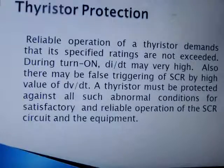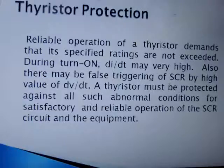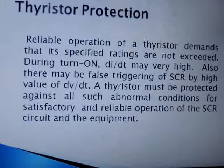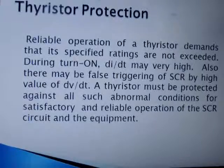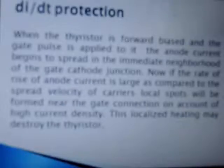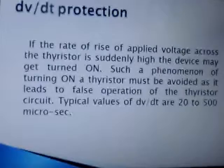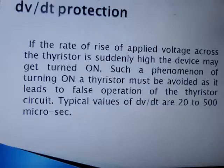Thyristor protection normally requires both di/dt and dv/dt protection. If the dv/dt of the supply is quite high, the thyristor will turn on without any gate pulse — this is called false triggering. To avoid this, dv/dt protection is provided. di/dt protection is required because a very high rate of change of current can cause local hot spots, potentially burning out the thyristor. To provide di/dt protection, an inductor is connected in series with the thyristor to limit the rate of change of current. For dv/dt protection, an RC snubber circuit is connected in parallel with the SCR to limit the rate of change of applied voltage.